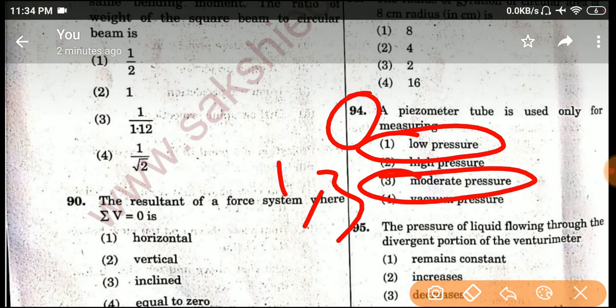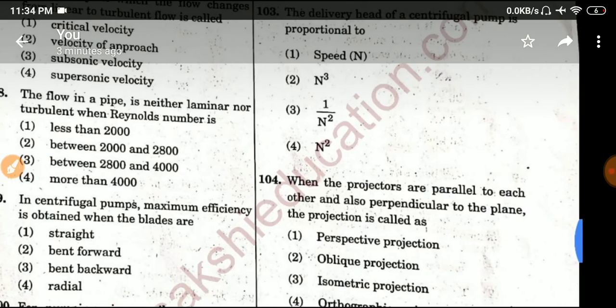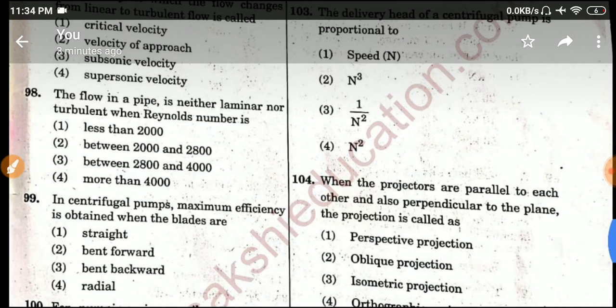This is the final key. Next, question number 98. The flow in a pipe is neither laminar nor turbulent when Reynolds number is...